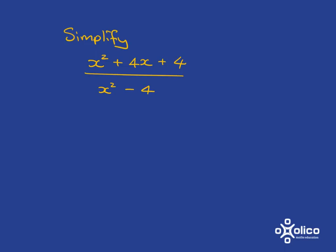You cannot cancel if you've got stuff that is added together, or you've got stuff that's subtracted. You have to have things multiplied together. So what do we do in order to get things multiplied together? We factorize.